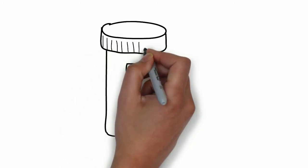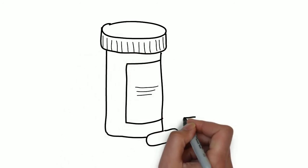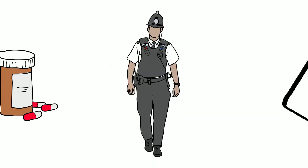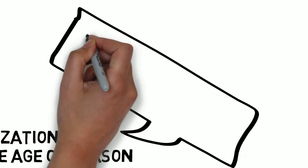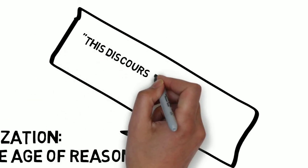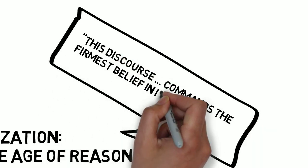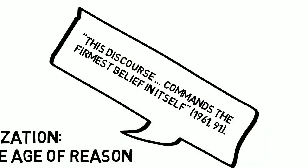Each logic reifies the other, or as Foucault pronounces, we find a rigorous organization dependent on the faultless armature of a discourse. This discourse, in its logic, commands the firmest belief in itself. It advances by judgments and reasoning which connect together.